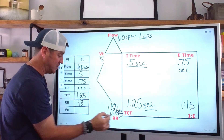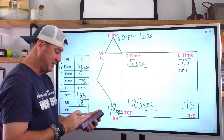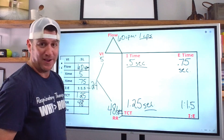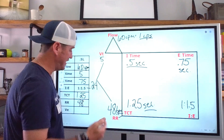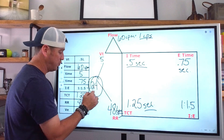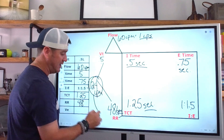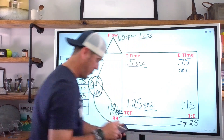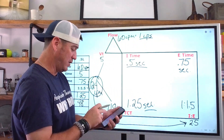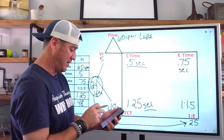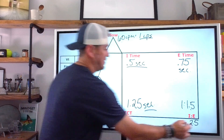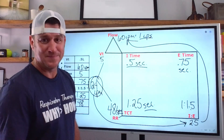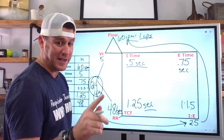We can now get our minute volume. Tidal volume times respiratory rate: 48 times 0.5 equals 24 liters per minute. And to check: 24 liters per minute times our total parts of 2.5 equals 60 liters per minute. That's how you do it.